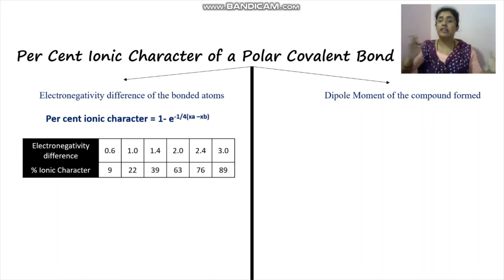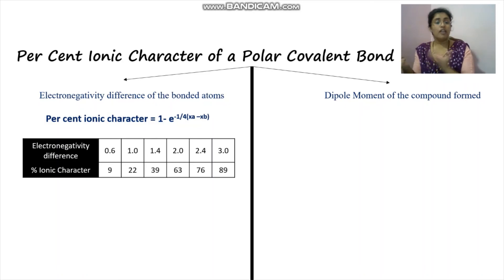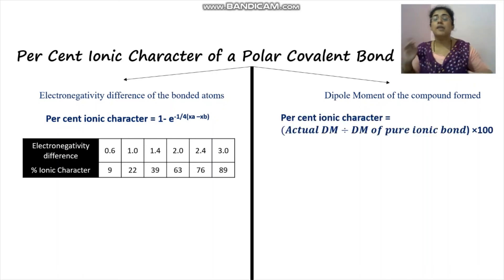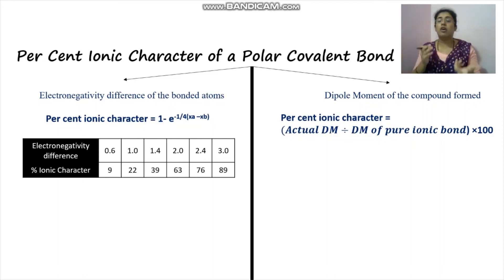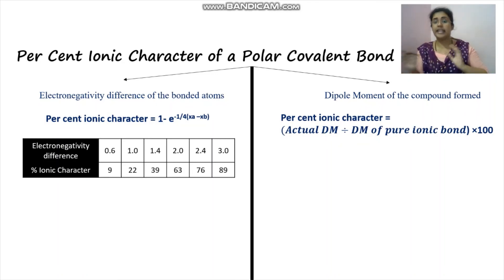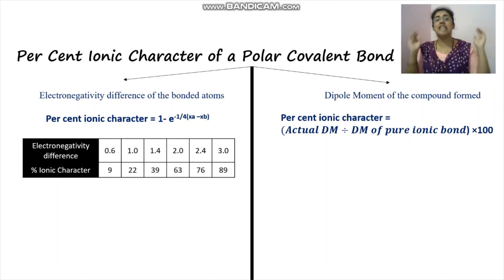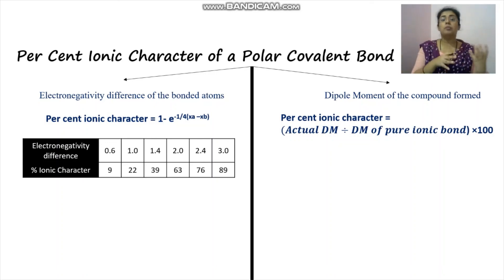As the electronegativity difference increases, the percentage ionic character increases — greater difference means more pulling away of electrons and more ionic character. For the dipole moment method, percentage ionic character = (actual dipole moment of the compound / dipole moment of pure ionic bond) × 100. This gives the ratio of the actual partial ionic character to what it would be if purely ionic.